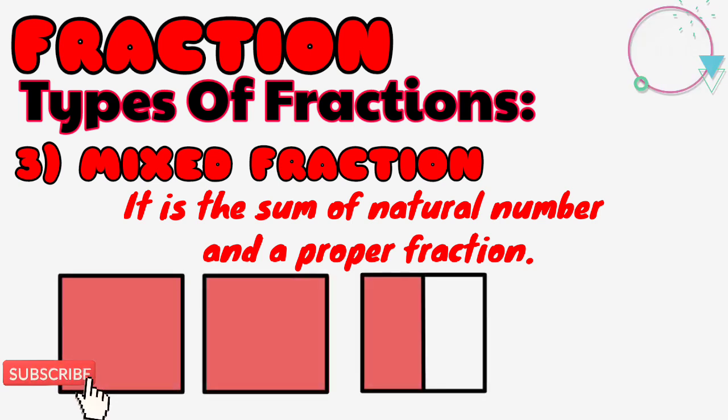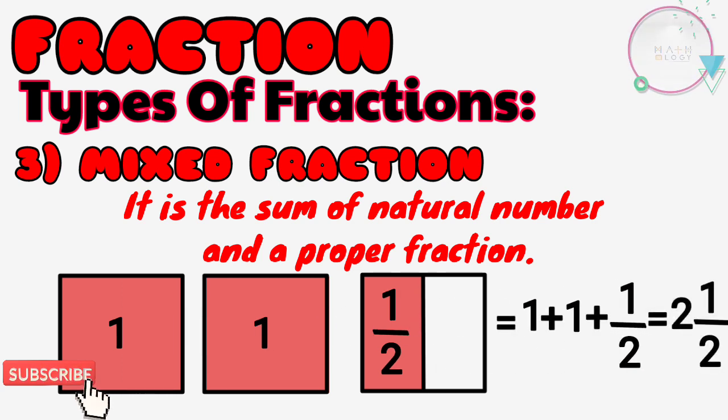Look at the three squares. The first and second squares are completely colored, and half of the third square is colored. When added together, this 2 and 1/2 represents a mixed fraction. Here, the number 2 is a natural number and 1/2 is the fraction.